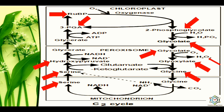In the peroxisome, serine is deaminated and reduced to hydroxypyruvic acid. Serine reacts with glyoxylic acid to form hydroxypyruvic acid and glycine. This hydroxypyruvic acid is converted into glyceric acid (glycerate), which enters the chloroplast where it is phosphorylated to 3-phosphoglyceric acid, entering the C3 cycle. This completes the whole cycle of photorespiration occurring across three structures: chloroplast, peroxisome, and mitochondria.